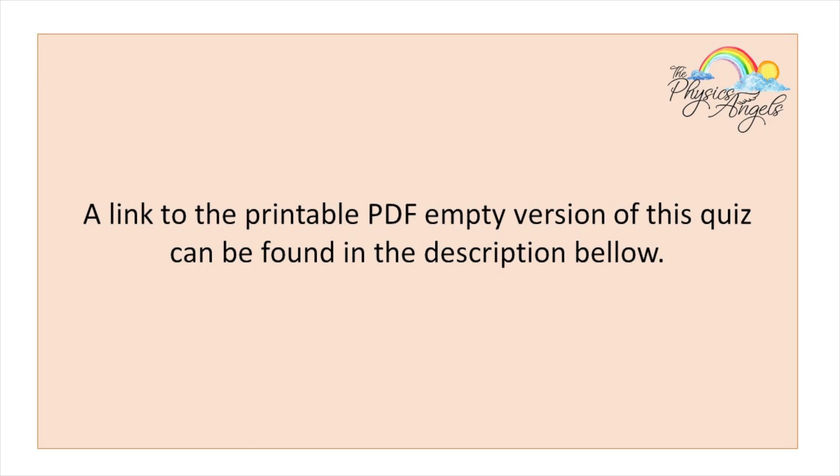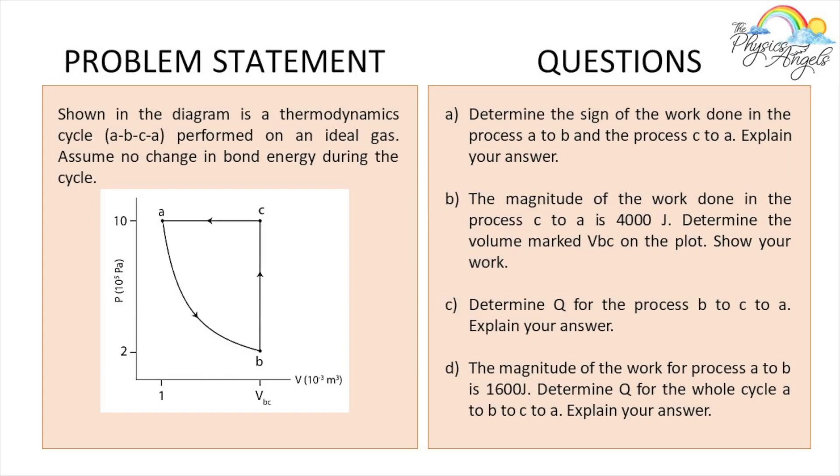So this is the problem that we're going to be solving today. Shown in the diagram is a thermal cycle ABCA performed on an ideal gas. Assume no change in bond energy during this cycle. We have to determine the sign of the work done in the process A to B and C to A, then the magnitude of the work done in the process C to A is given and we have to figure out the volume, then we have to figure out Q for the process B to C to A, and finally we're given the actual magnitude of the work for the process A to B and we have to determine Q for the whole cycle.